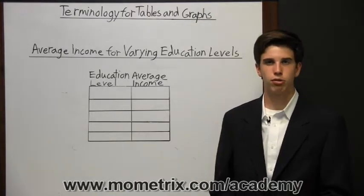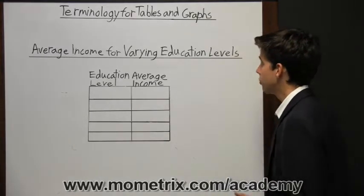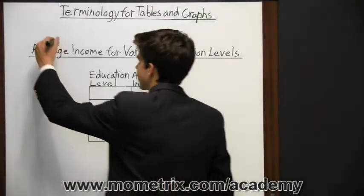The title of a table could be something like price of milk compared to demand, or in this case, the average income for varying education levels. So this right here is the title.